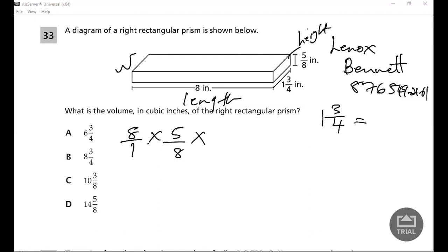To do that, we multiply 1 times 4, that's 4, plus 3 equals 7 over 4. So we have 7 over 4.